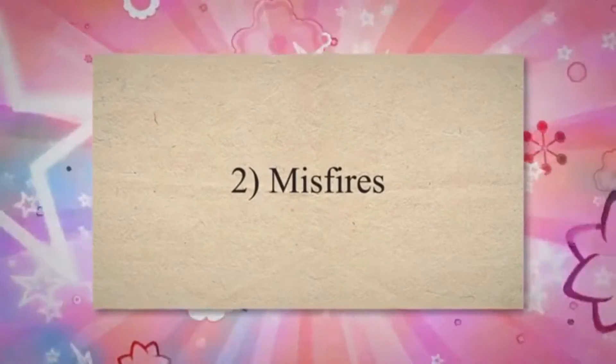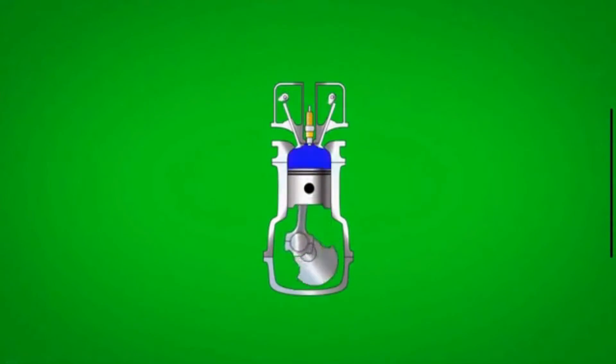Number 2: Misfires. The ECM controls the timing and duration of fuel injection and ignition spark. If it malfunctions, it may cause misfires, where the fuel-air mixture in one or more cylinders doesn't ignite properly, leading to a rough running engine.